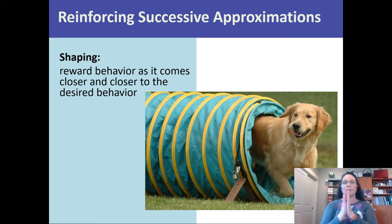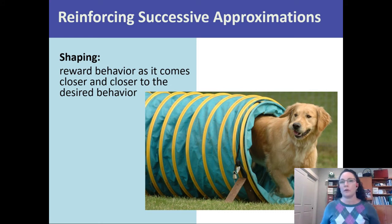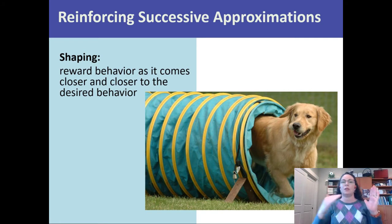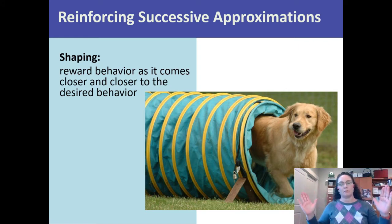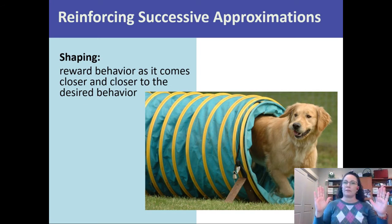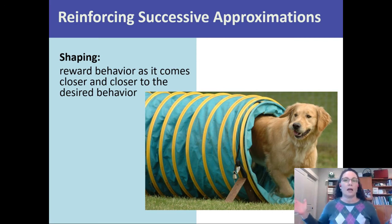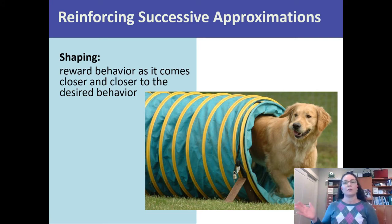You shape the dog through successive approximations to being willing to go through the tunnel. Those tunnels collapse, so you can collapse it down until it's just a little ring and reinforce the animal for going through the ring. Then spread it out a little wider, then two widths, bringing it a little longer each time. If they start to balk, bring them back. The reinforcement comes when they go a step further — closer and closer — until the dog can run through a 10-foot tunnel it never would have gone through initially.